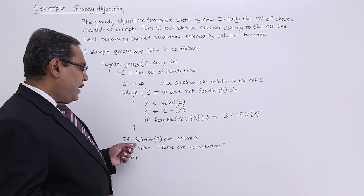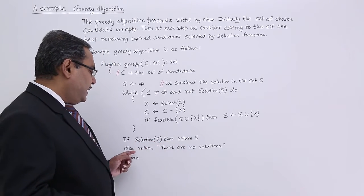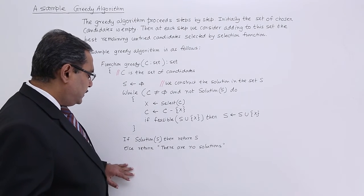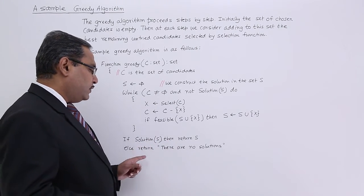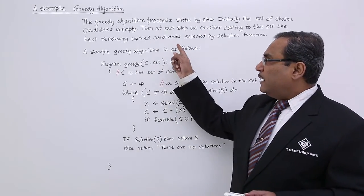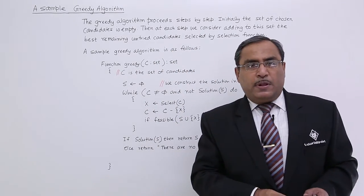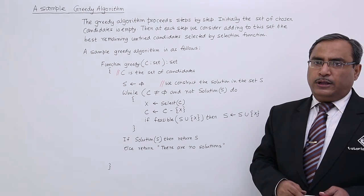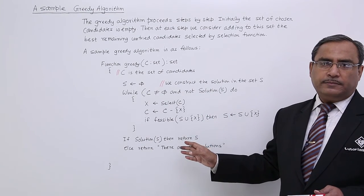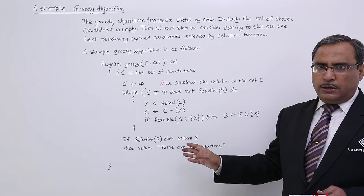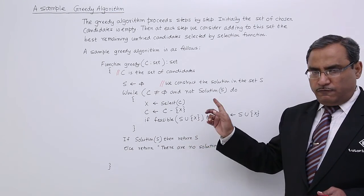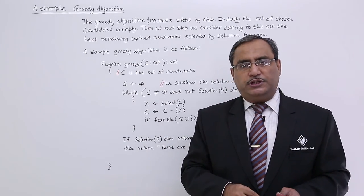When solution(S) is true, then return S; else return no solution. Note that the last return may not be required since the true part already has a return. So that is my sample generic greedy algorithm — all greedy algorithms will fall within this particular skeleton. Please watch the previous video to get the logic very clearly. Thanks for watching.